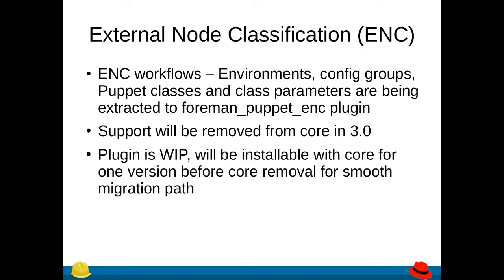The reason we are doing this is that this is probably the majority of the UI clutter and setup options that are not needed if you don't use Puppet. If you remember the host form, there are around two tabs and three or so fields on that form that are just used only for Puppet, and you don't care about those if you don't actually use Puppet. Support will be removed from Foreman core in version 3.0 — which version will be 3.0 is yet to be determined, but it will probably be in one or two versions from now. The plugin is still a work in progress.